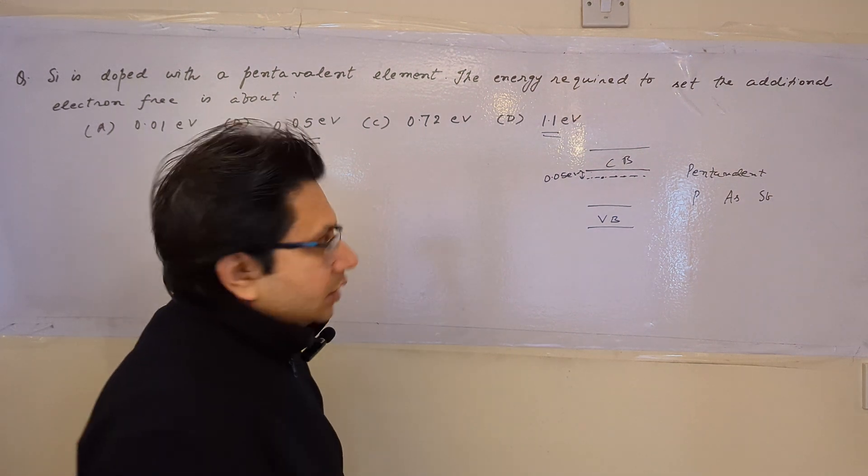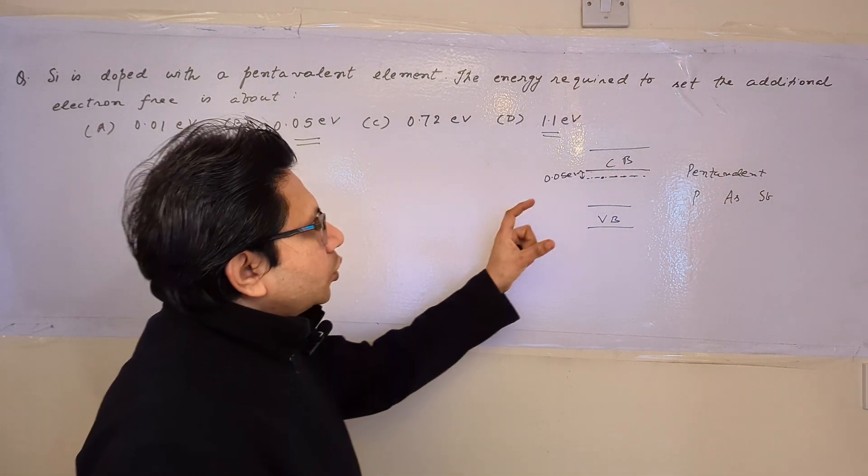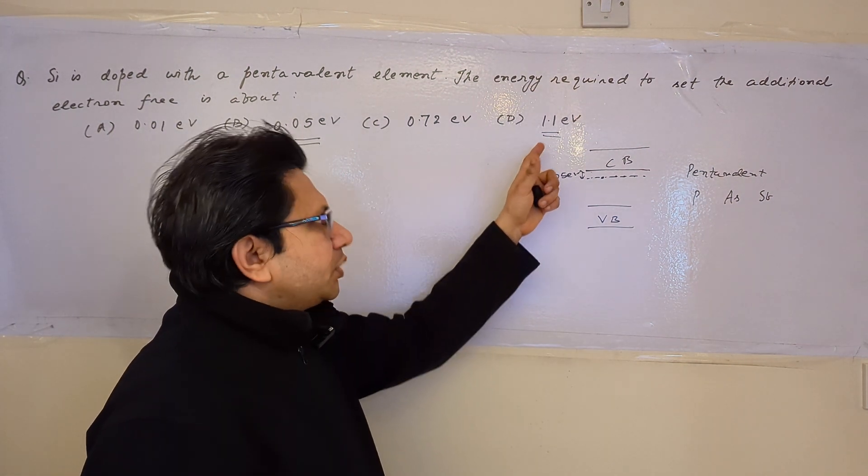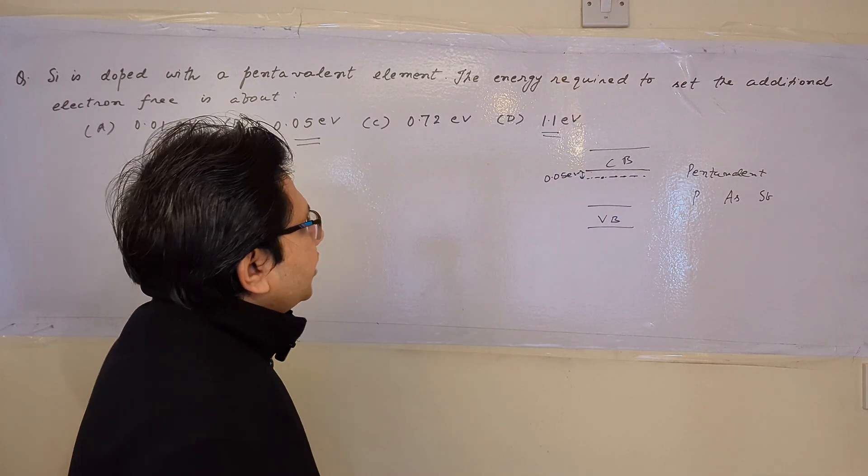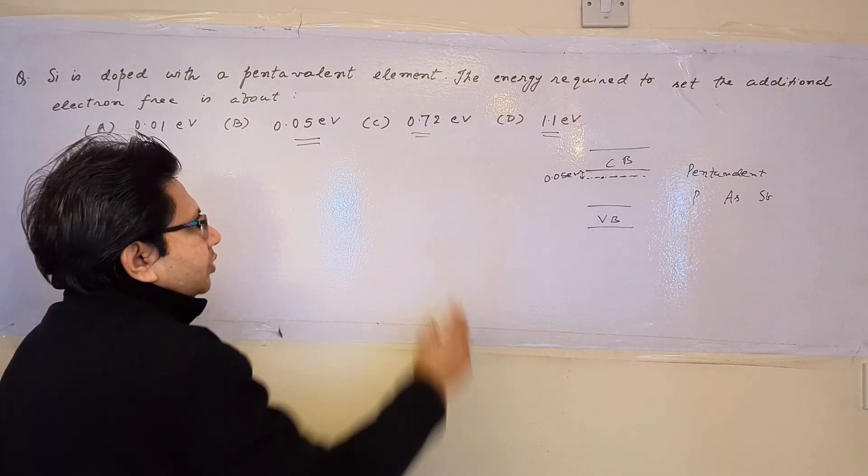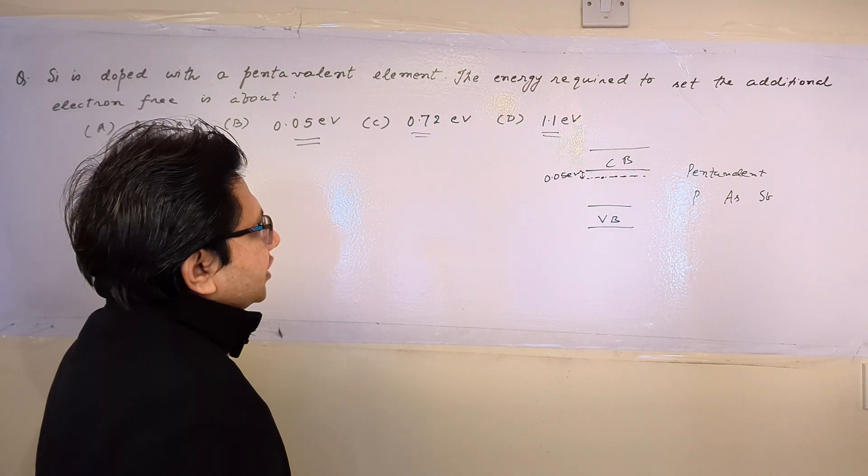Which means that only silicon is present. Then nearly at room temperature, this is the value of the energy band gap. This is the value of the energy band gap for germanium kind of elements, germanium semiconductor.